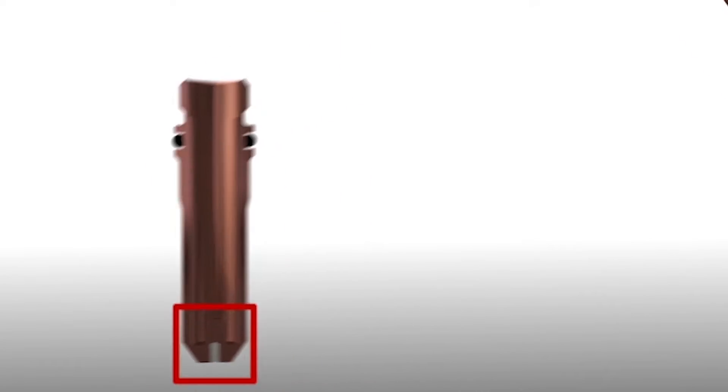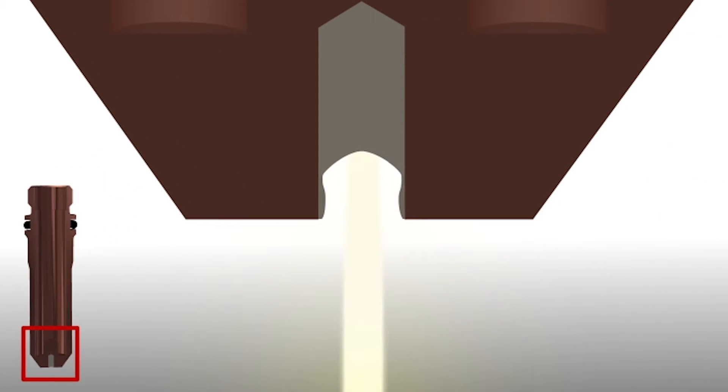When plasma cutting with a copper electrode, a layer of hafnium oxide forms on the walls of the electrode as the hafnium wears. It acts as a heat shield protecting the copper from the plasma arc.